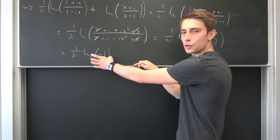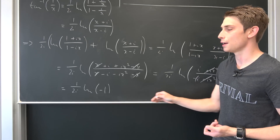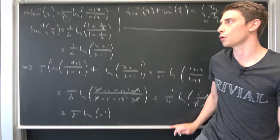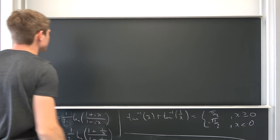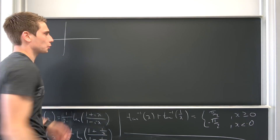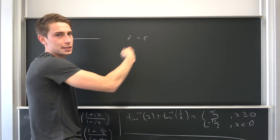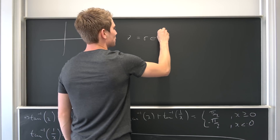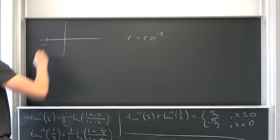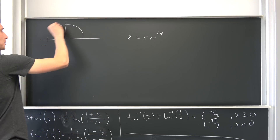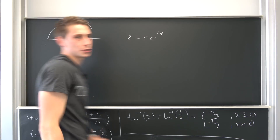We're dealing with the principal log, so we want to find what the natural log of −1 actually is. Let's look at the complex plane. A complex number is r·e^(iφ). If we look at −1, it's right here on the real axis. We start at the origin, go to −1, and our angle φ is π.